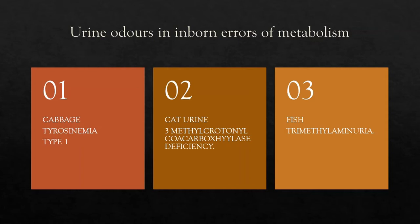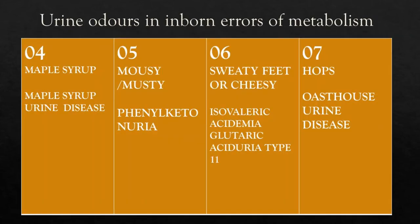If it smells like fish, suspect trimethylaminuria. If the urine odor smells like maple syrup, suspect maple syrup urine disease. If the urine odor is mousy or musty, phenylketonuria should be suspected and evaluated.